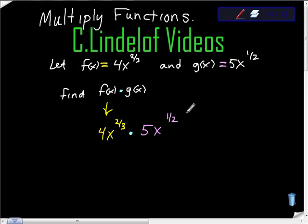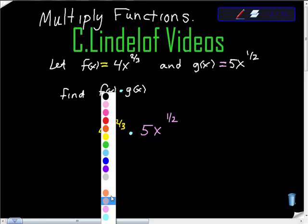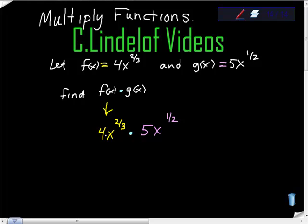What I want to remind everybody is this: people often try to distribute incorrectly. 4x to the two-thirds means 4 times x to the two-thirds, and we're multiplying that by 5 times x to the one-half.